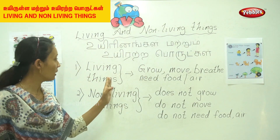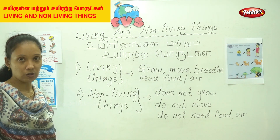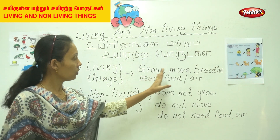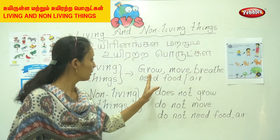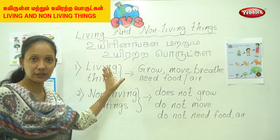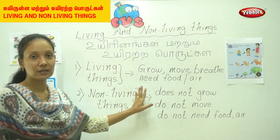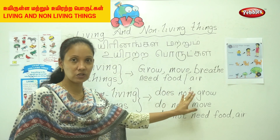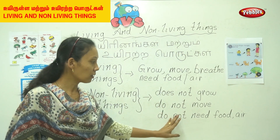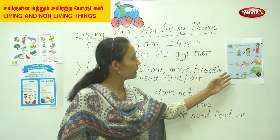That is living and non-living things. Living things: they grow, move, breathe, and need food and air. Non-living things: they do not grow, they do not move, and do not need food and air.